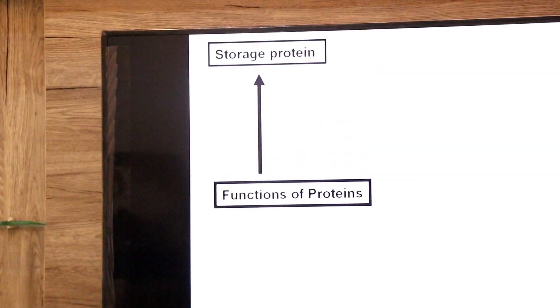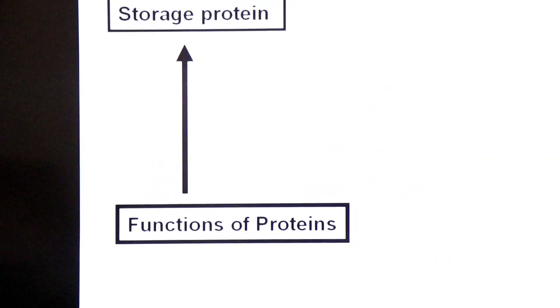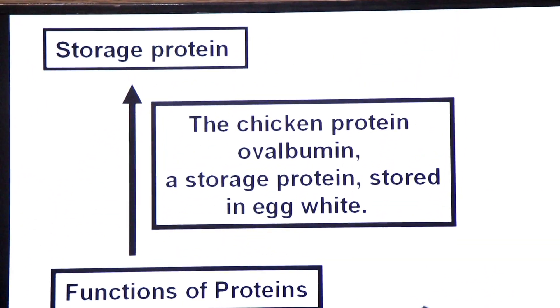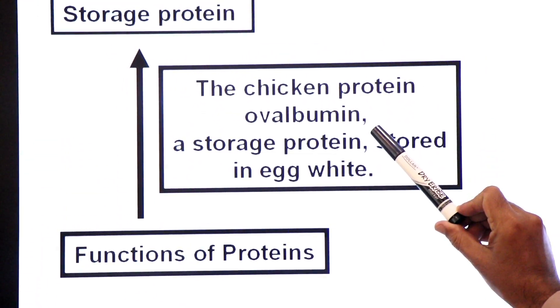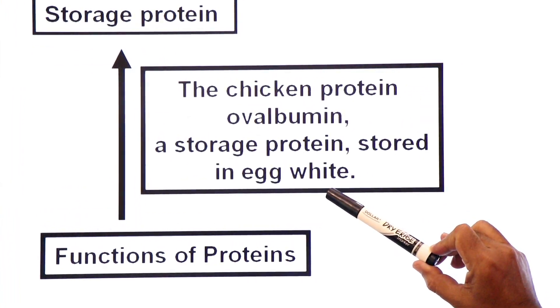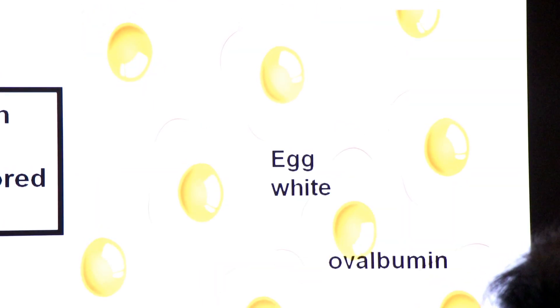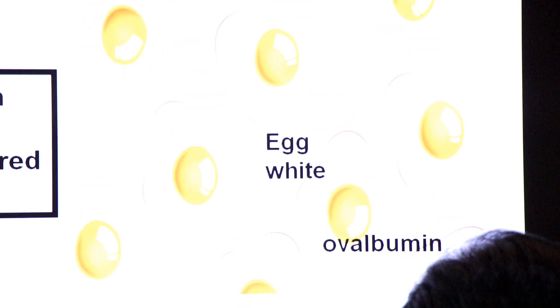Next is the storage protein function. When you eat a chicken egg, the white of the egg contains a protein stored there — it is called ovalbumin. Ovalbumin is a storage protein found in egg white. The white of the egg contains a storage protein known as ovalbumin.